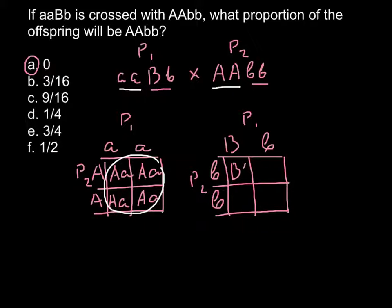Now as you see we are going to get different results. Bb here, bb here, Bb here and bb here. As you see, 50% would be heterozygous and another 50% would be homozygous recessive.